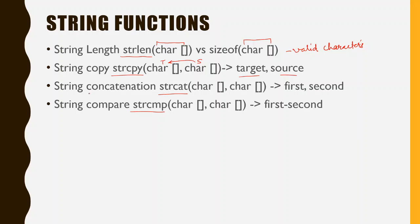The next function is strcat, which stands for concatenation. Concatenation simply means joining two strings together. Suppose you have a first string and a second string and you want to join them together — this can be done with strcat. The first string and second string are given as input, and the output of the merging is stored in the first string. There are some conditions you have to follow, which we will see in the strcat program.